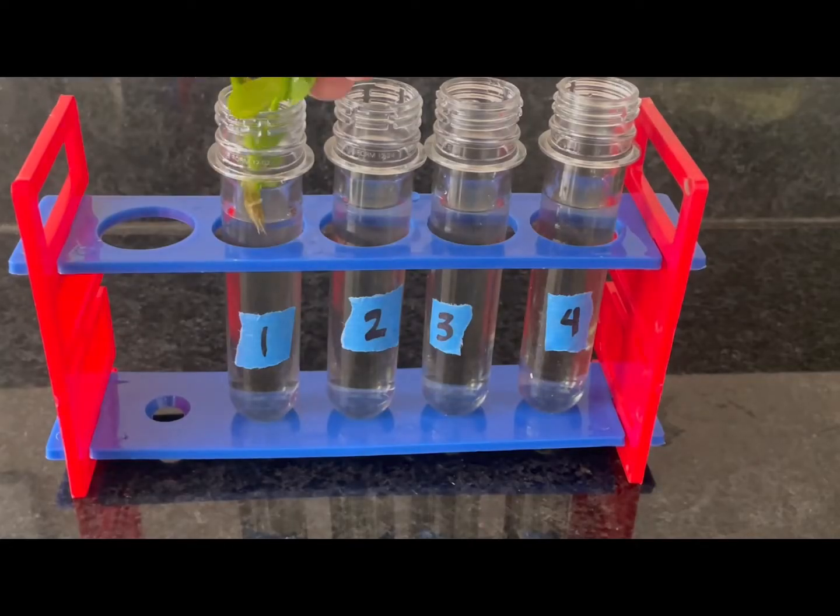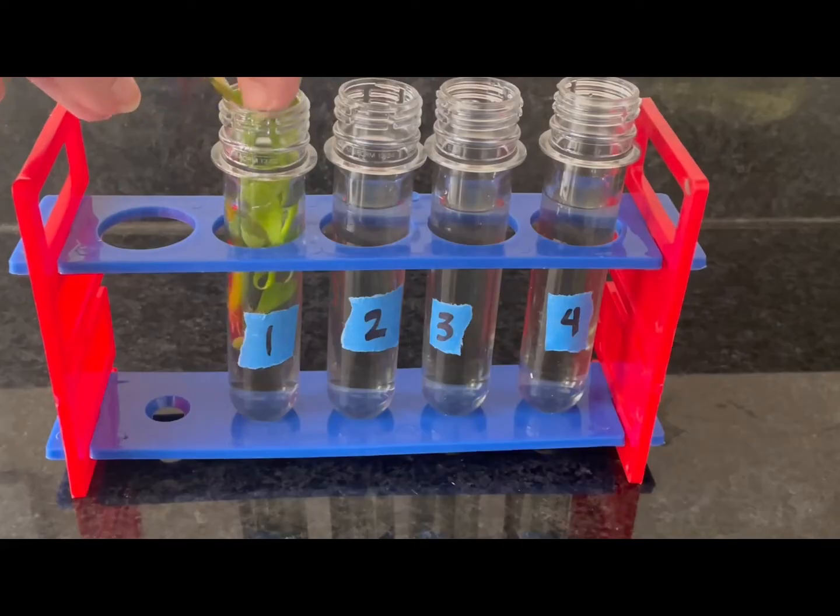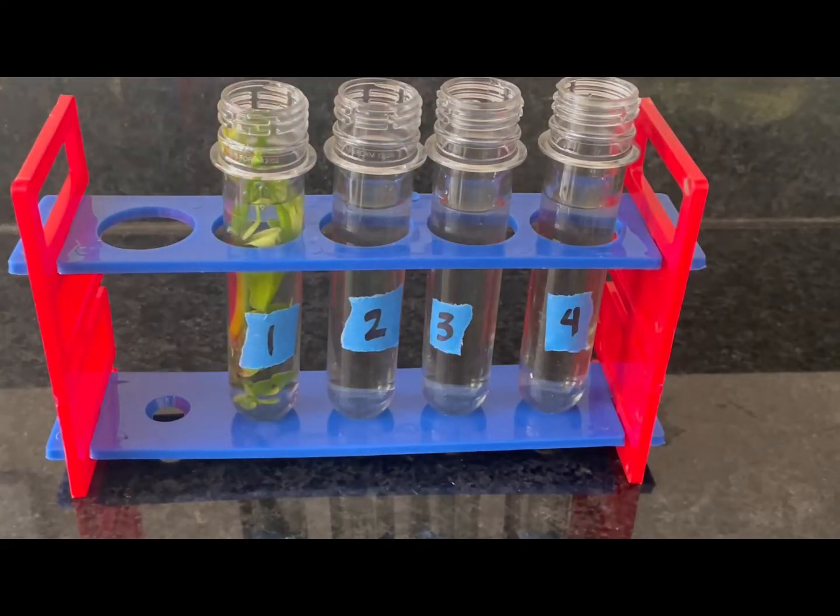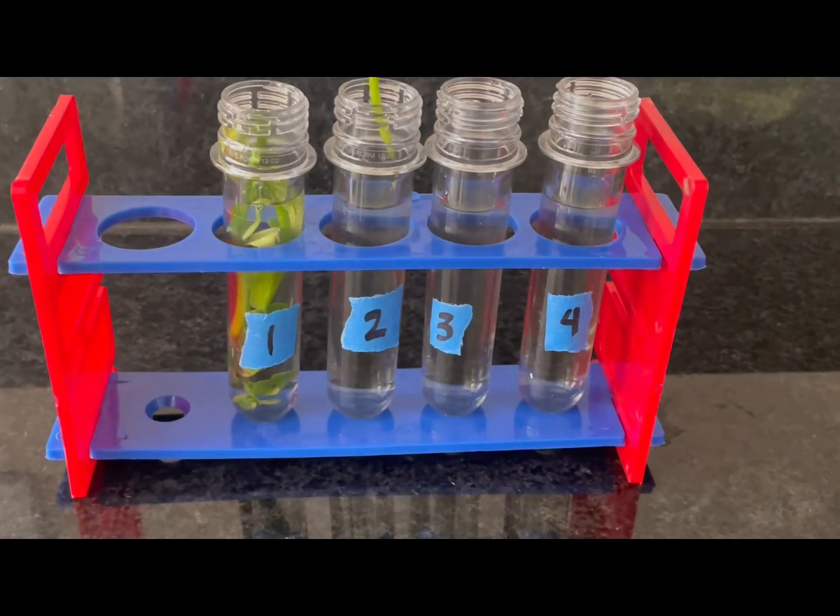Then you're going to add an aquatic plant to the first two test tubes. The last two test tubes will be the control without plants.